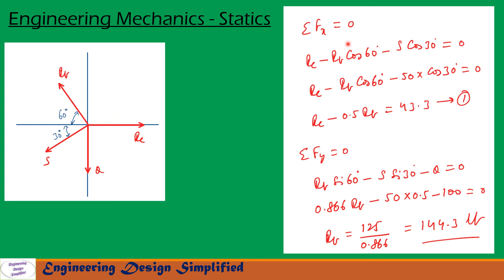Applying sigma FX = 0, that is the sum of forces along the X direction equals zero. Taking the positive X direction, we have RC minus RB cos 60 minus S cos 30 equals zero. Q has no horizontal component since it is vertically downwards. After substituting values and simplifying, we get RC minus 0.5 RB equals 43.3. Let us call that Equation 1.